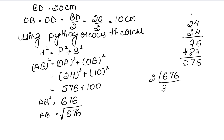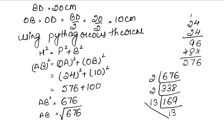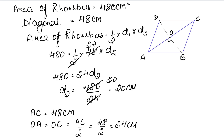Finding the square root of 676: we know that 169 is 13 squared, so √676 = 2 × 13 = 26 cm. Therefore each side of the rhombus is 26 cm.